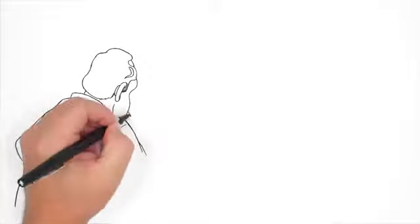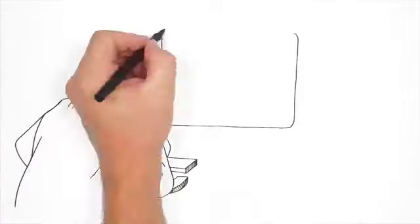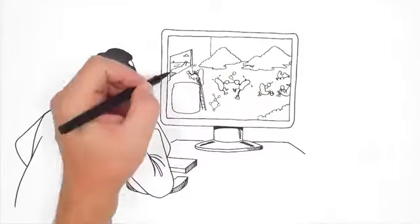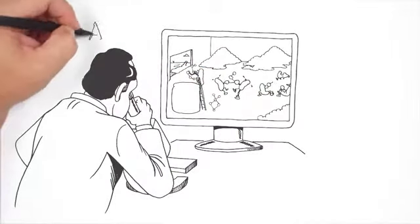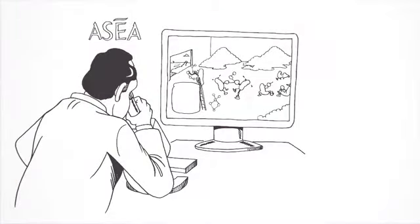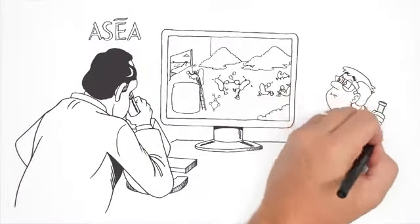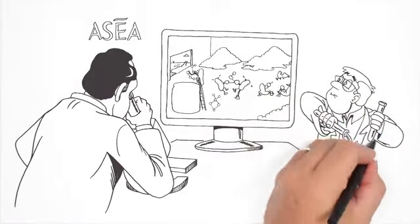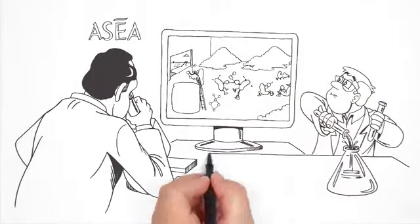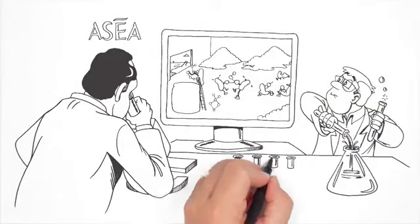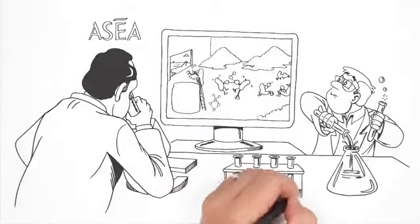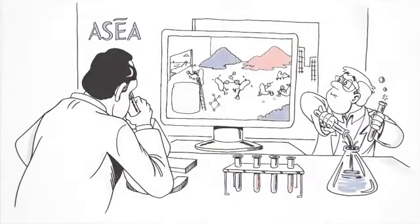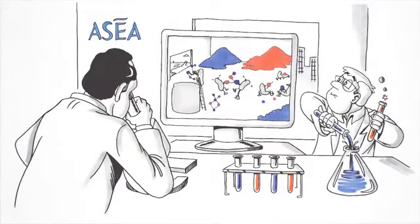So to make a redox signaling supplement outside of living cells, it makes sense to start with the same building blocks: salt and water. That's just what a company called ASEA does. We begin with a pure, pristine saline solution, then using a highly protected and patented electrochemical process, we break apart the bonds that hold the sodium, chloride, hydrogen, and oxygen atoms together. These free-floating atoms are then recombined in new configurations and voila, redox signaling molecules.